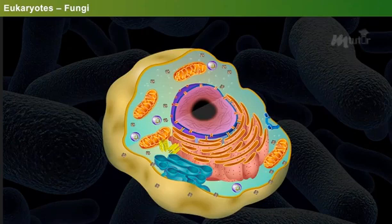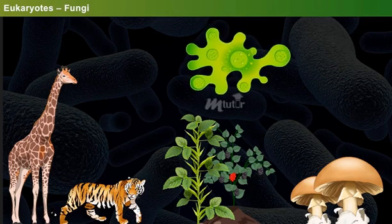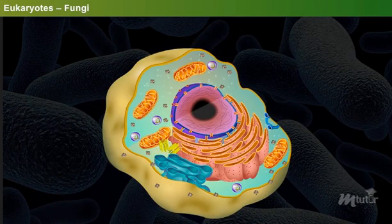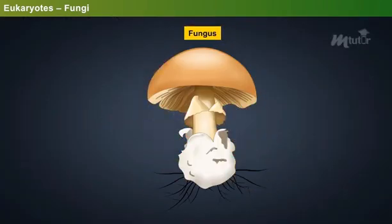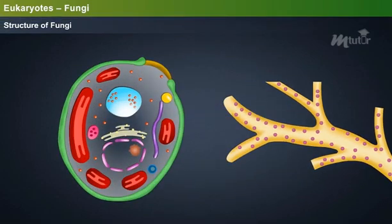Now let us discuss eukaryotes and their structure in detail. A eukaryote is an organism with a complex cell. Examples include animals, plants, algae and fungi. Let us learn about the important eukaryote fungus in detail.